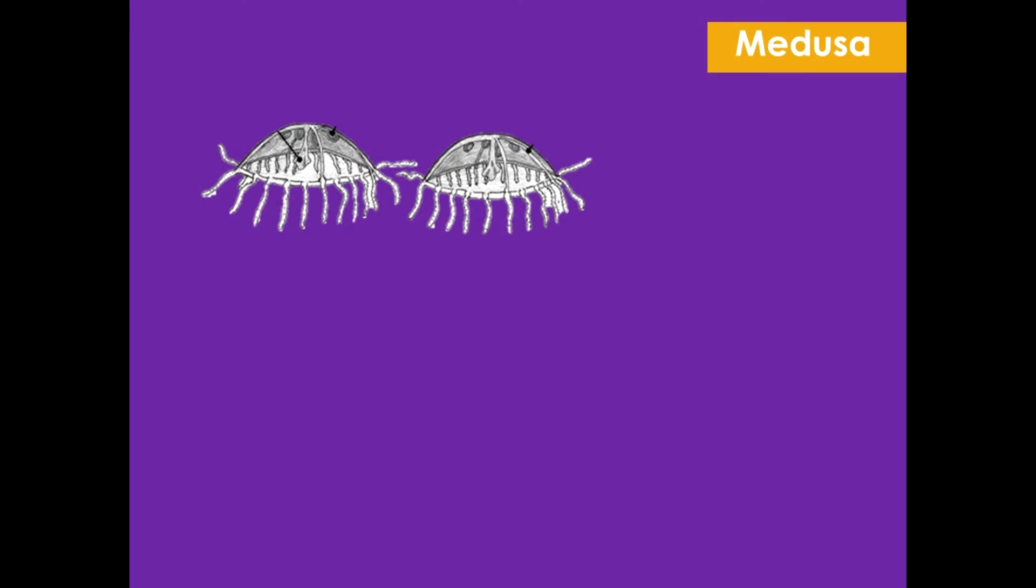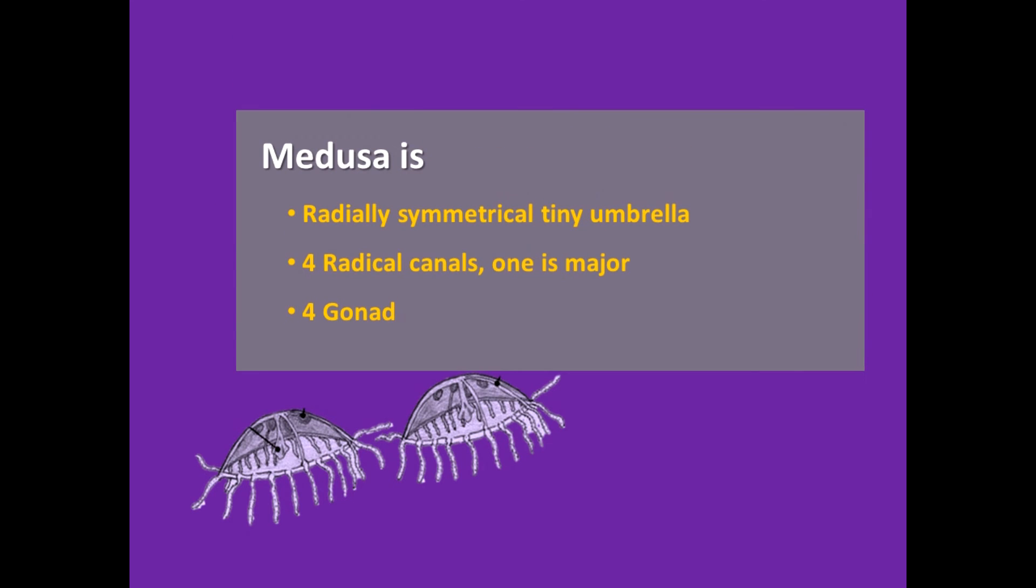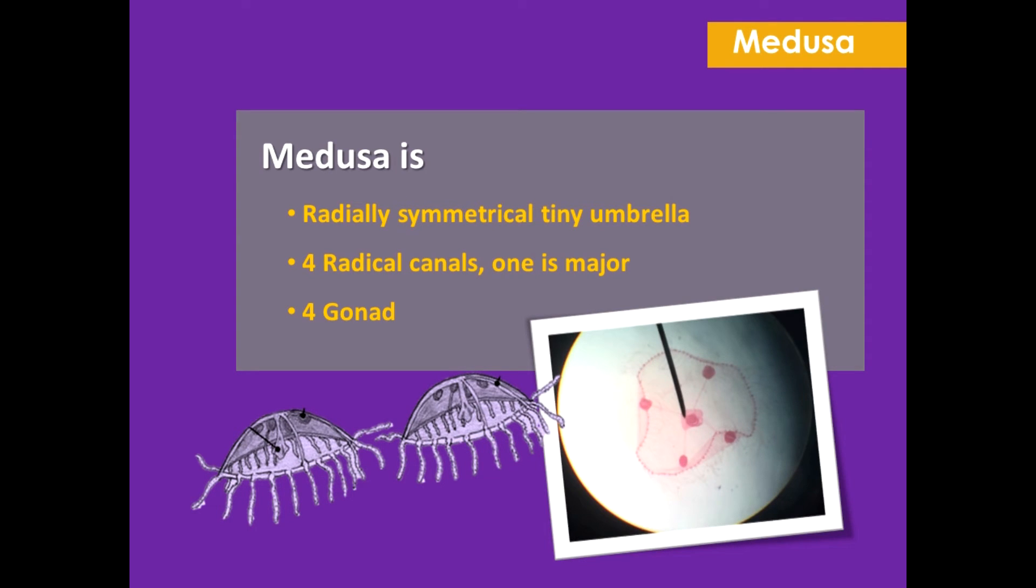The medusa is a laterally symmetrical tiny umbrella. The subumbrellar surface has four radial canals and a circular canal on the margin. The medusa bears four gonads, one in the middle of each radial canal.